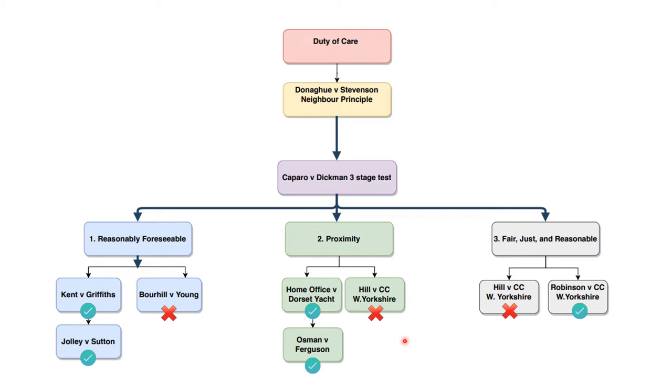So duty of care. We start with the Donoghue and Stevenson case that we've just mentioned. The test for duty of care, we start with the neighbor principle. That comes from Lord Atkin's famous statement where he said that you must take reasonable care to avoid acts and omissions that you can reasonably foresee are likely to injure your neighbor. That test was very vague, so it was further developed by the case of Caparo and Dickman, which gave us this handy three-stage test for determining when a duty of care would be found.